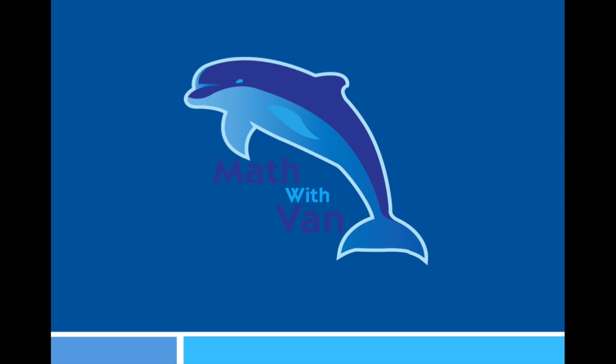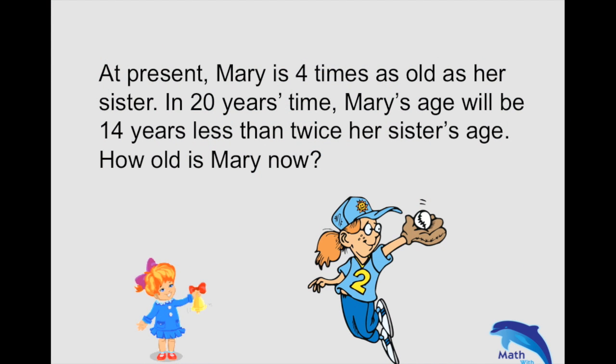At present, Mary is four times as old as her sister. In 20 years time, Mary's age will be 14 years less than twice her sister's age. How old is Mary now?